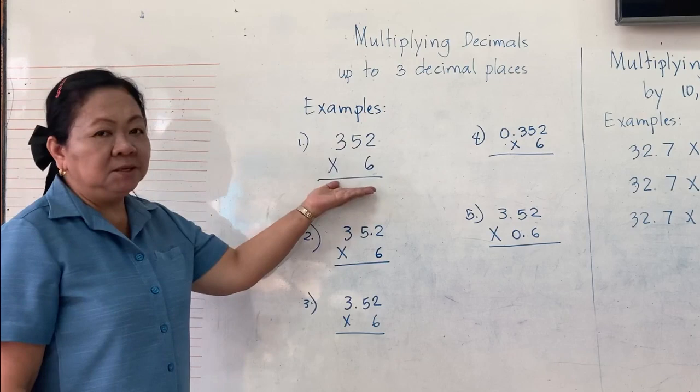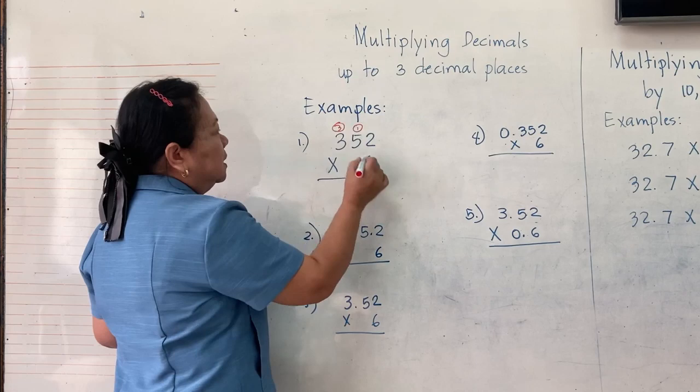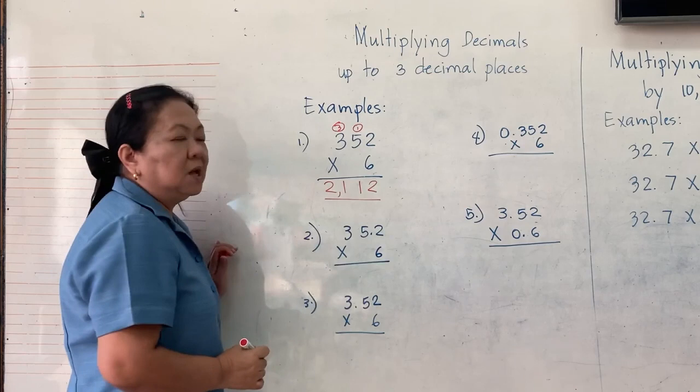Here, we don't have a decimal yet. 6 times 2 equals 12, carry 1. 6 times 5 equals 30 plus 1 equals 31, carry 3. 6 times 3 is 18 plus 3 is 21. So the answer is 2,112.